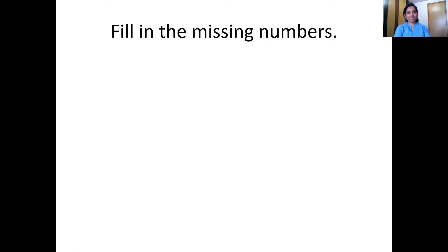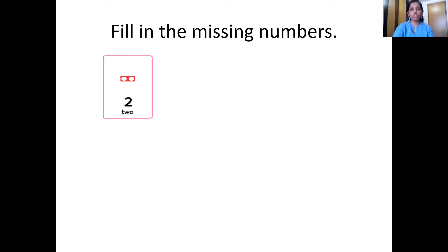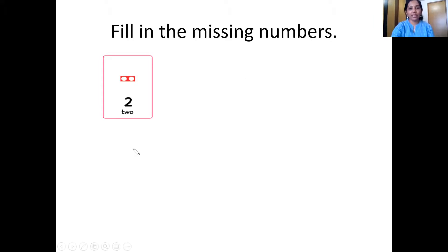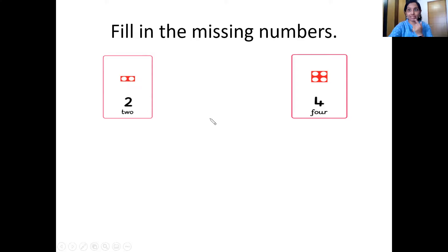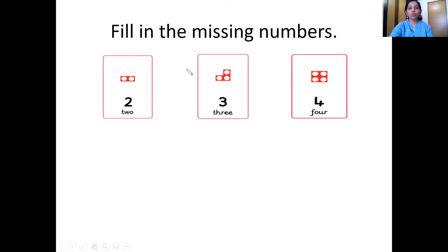Now we have a task — we have to fill in the missing numbers. So are we all ready? Let's go for it. Which number is this? Yes, it's two. And then which number is this? Four. Something is missing here. Let's count and check — two... four. You are right, it's three. So we have two, three, and four. Three was missing.